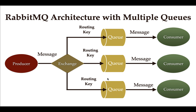In the RabbitMQ architecture with multiple queues, the producer sends a message to the exchange first, and then the exchange uses a routing key to route that message to the respective queues, and then the consumer reads the message from the respective queues. The most important component in this architecture is the exchange — you need to understand how it routes messages to the respective queues.